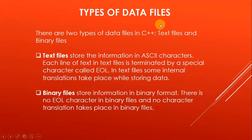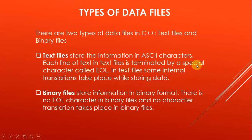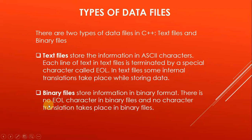Now, types of data files. There are two types of data files in C++: text files and binary files. Text files store information in ASCII characters, and each line of text in a text file is terminated by a special character called EOL. In text files, some internal translations take place while storing data. Binary files store information in binary format. There is no EOL character in binary files, and no character translations take place in binary files.